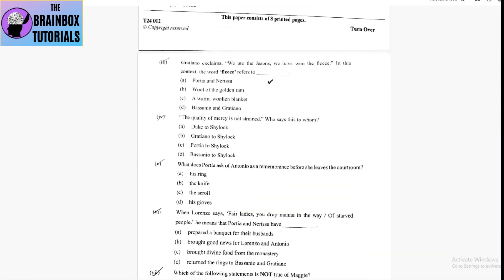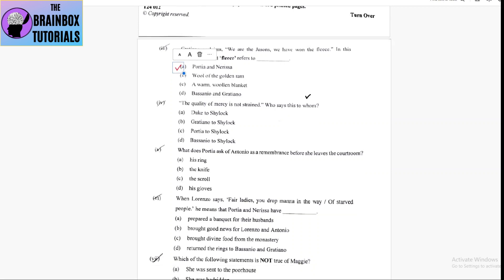Number 3, Gratiano exclaims, we are the Jasons. We have won the fleece. In this context, the word fleece refers to option number A, Portia and Nerissa. Yes, option number A is correct. They have won Portia and Nerissa's hands in the casket and that is why he said this to Lorenzo and the friend Solanio when he came.